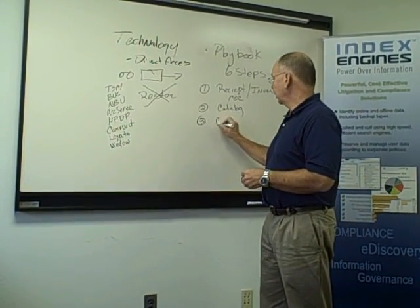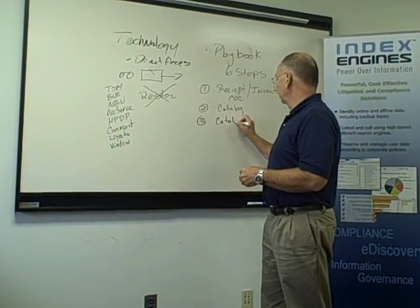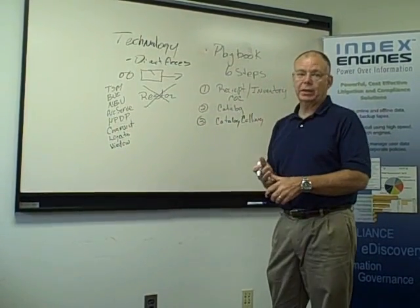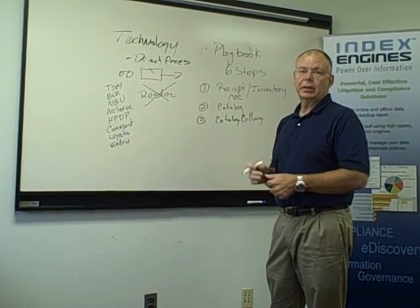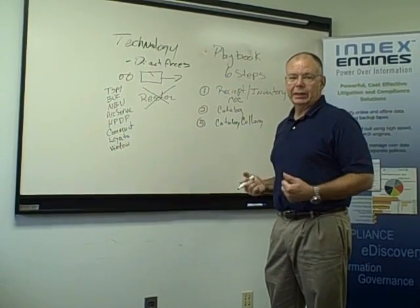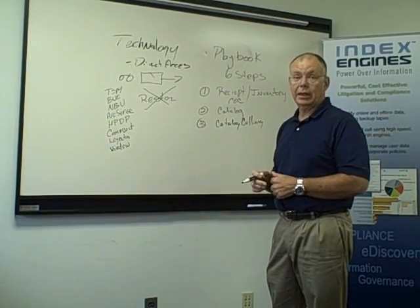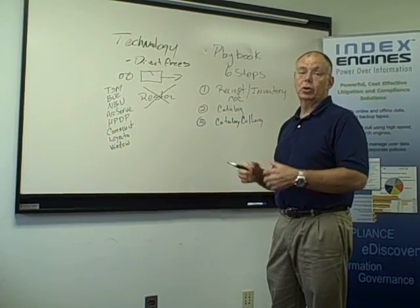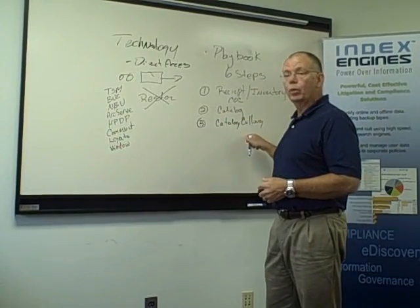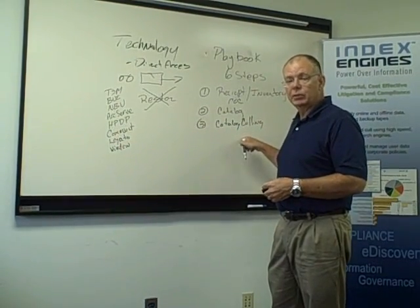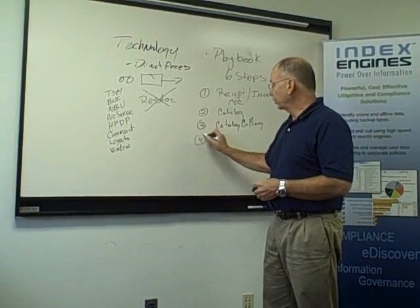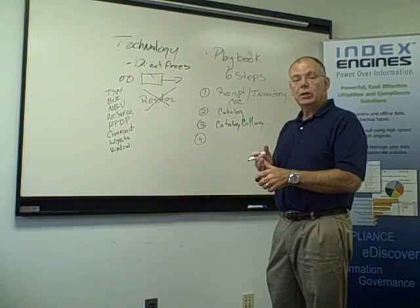The third step is the catalog culling operation. This is where we weed out any tapes that may be blank, tapes that cannot be read due to media errors, and any tapes that — based on information obtained at catalog time — may be beyond the scope of the tape remediation parameters set forth by legal. Once the tapes are culled down to the set you want to process, you set up a tape remediation policy.